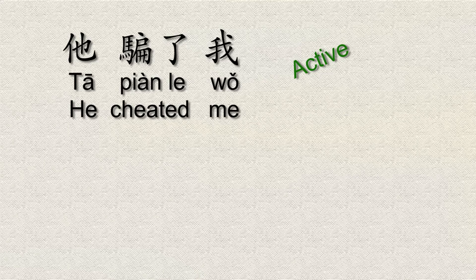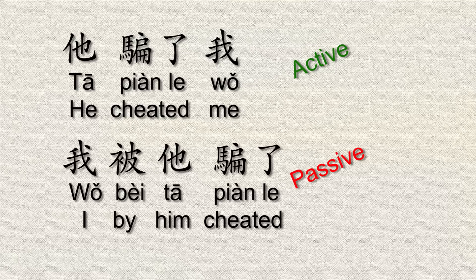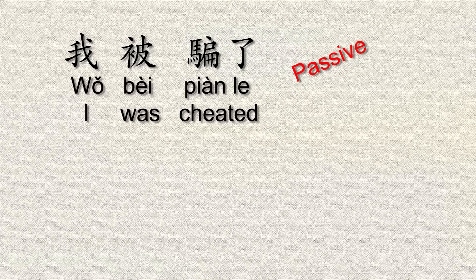Let's take another example — sorry, this one's kind of negative too; maybe that's just the nature of this word. 'Tā piàn wǒ' — 'he cheated me' — that's active. The passive way of saying this would be: 'wǒ bèi tā piàn le' — 'I was cheated by him,' or literally 'I by him cheated.' That's how it is in Chinese.